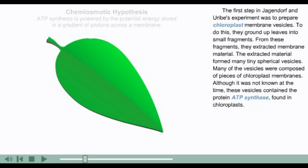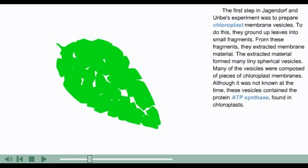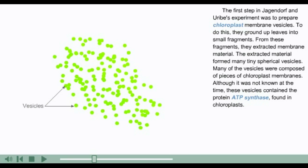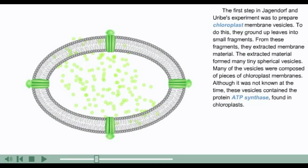The first step in Jagendorf and Uribe's experiment was to prepare chloroplast membrane vesicles. To do this, they ground up leaves into small fragments. From these fragments, they extracted membrane material. The extracted material formed many tiny spherical vesicles. Many of the vesicles were composed of pieces of chloroplast membranes. Although it was not known at the time, these vesicles contained the protein ATP synthase found in chloroplasts.